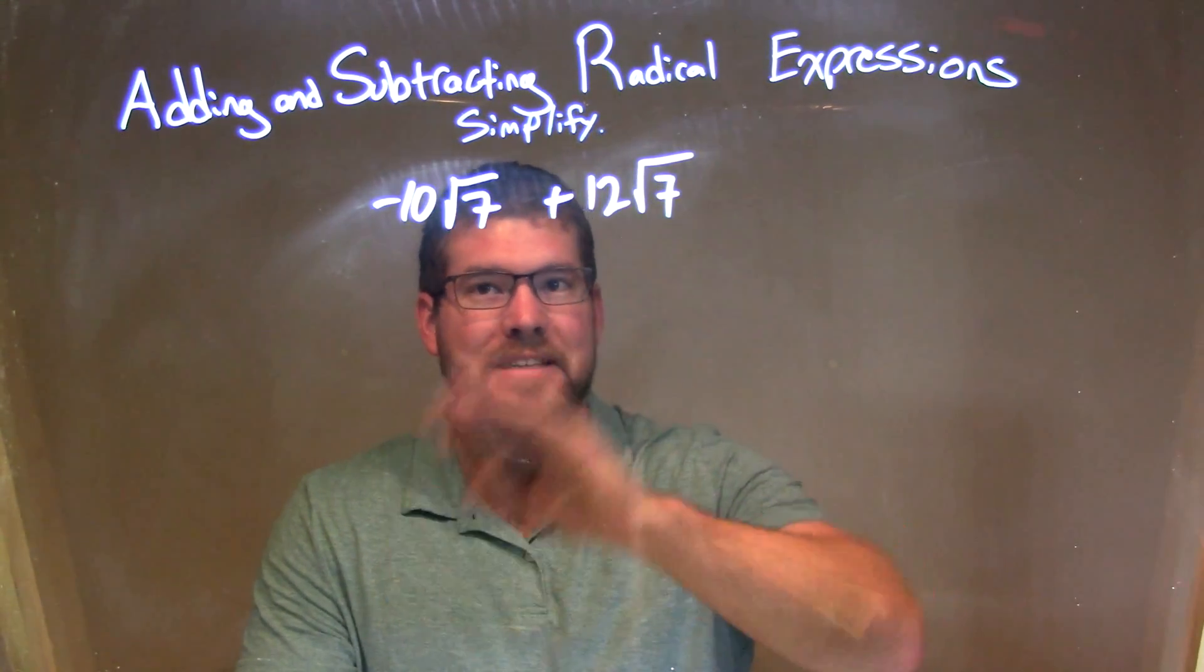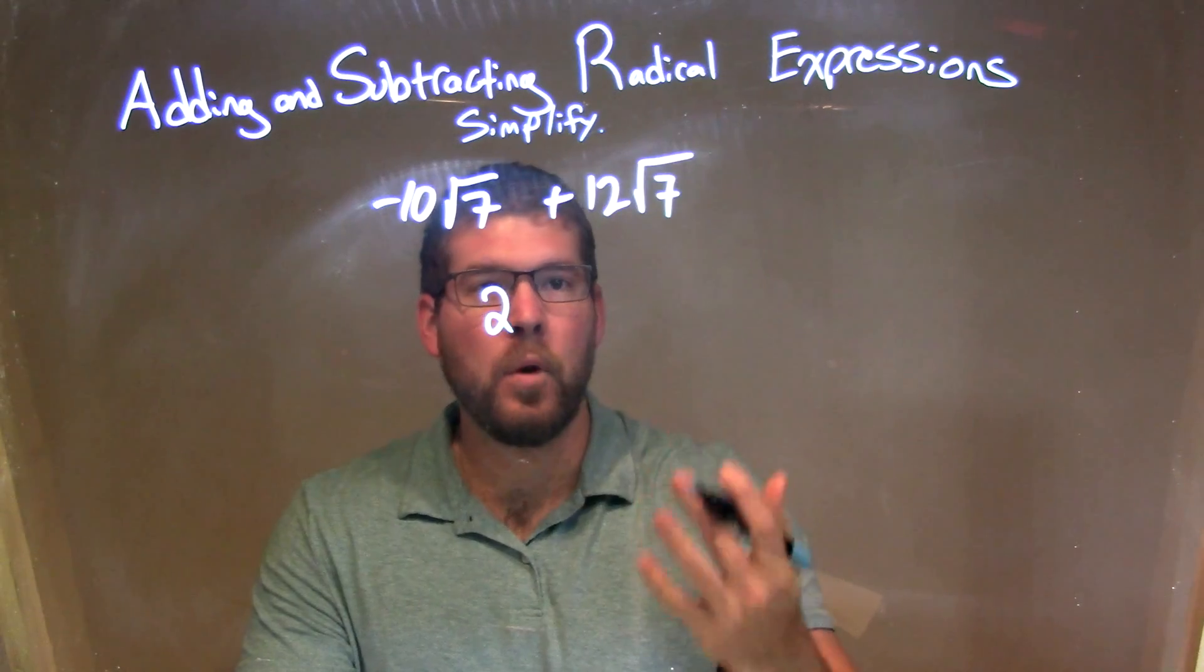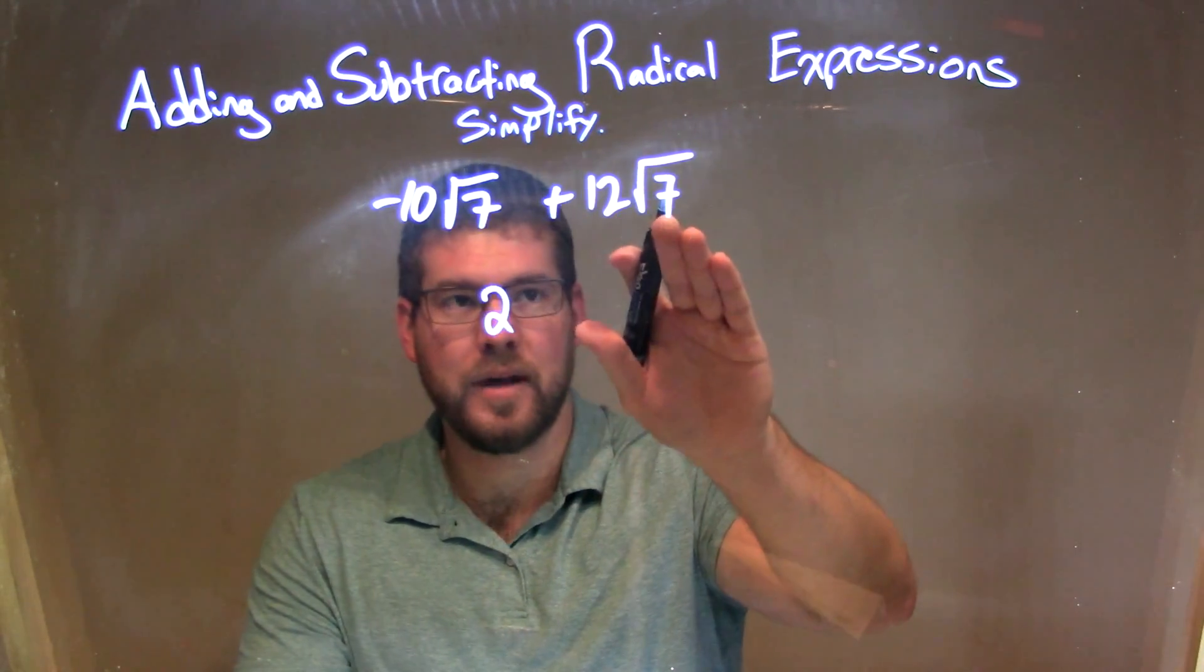Well, negative 10 plus 12 is just a positive 2. We have positive 2, and that's going to be multiplied by just the square root of 7.